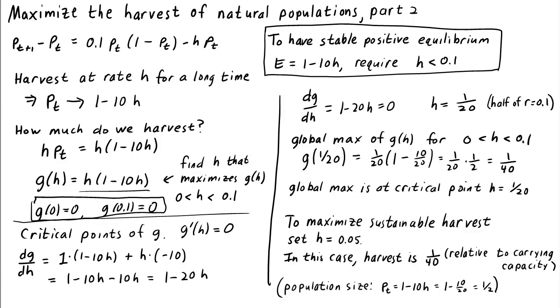The interesting thing is that the maximum harvest occurs right when the population is at half its carrying capacity. Of course, this is just true for our logistic model. So if you believe the logistic model, which is just a very simple approximation to how populations really grow, then to maximize the sustainable harvest, one should harvest so that the population size is half its maximum, and at that harvesting rate, one is harvesting at half the low density growth rate.